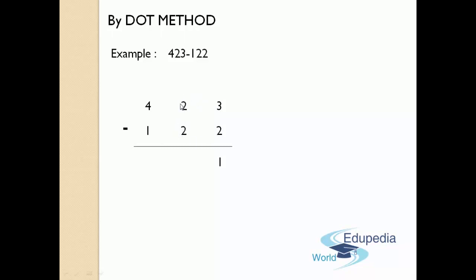Here the digits are the same — equal. If you subtract them, you will get zero. Just subtract them and put the answer in the answer's place. Now again, move on to the third column, i.e. the hundreds place. Check the digits that are in the minuend and in the subtrahend. In the minuend, the number is 4 and in the subtrahend, the number is 1. Here 4 is greater than 1, so we have to proceed in our old-fashioned way. Subtract 4 and 1 — what you get is 3.